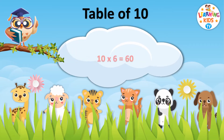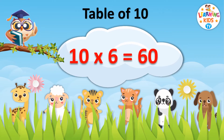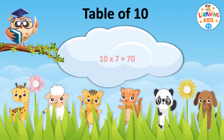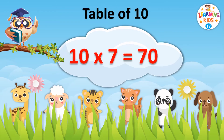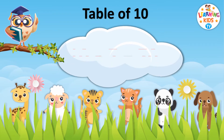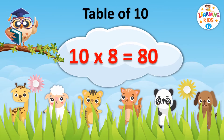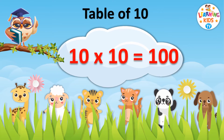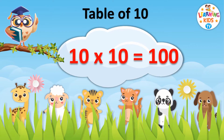Ten sixes are sixty. Ten sevens are seventy. Ten eights are eighty. Ten nines are ninety. Ten tens are hundred.